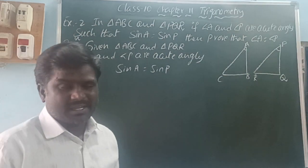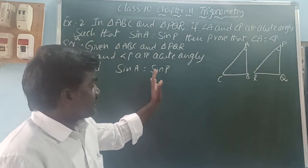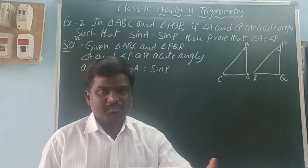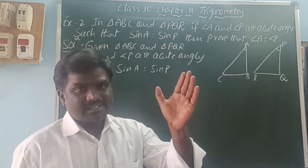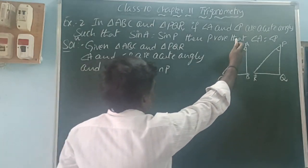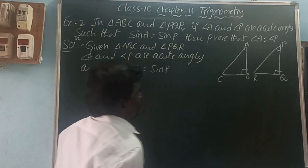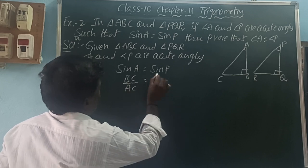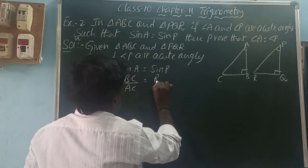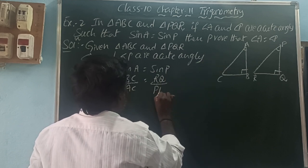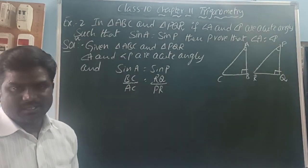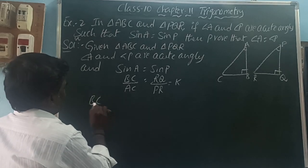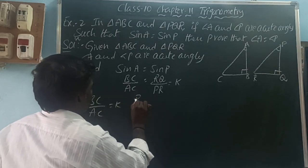Sine A means the sine ratio at point A, and sine P means the sine ratio at angle P. The sine ratio is the ratio of the opposite side to the hypotenuse side. So sine A is opposite side BC over hypotenuse AC, and sine P is opposite side RQ over hypotenuse PR. These two ratios are equal, but we don't know by how much — so let us take that equal to a constant k.